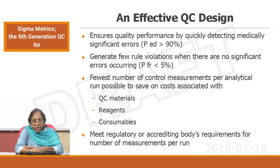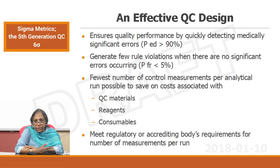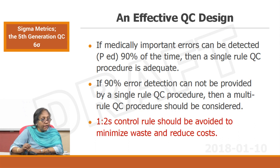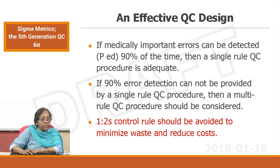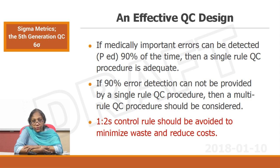That is also important because NABL, if it is asking for two levels of control for a certain number of patients, that is a regulatory requirement if you are looking for NABL accreditation. A very high sigma — like 6 sigma — technically will not need you to do more than one level of control, but if NABL regulations require two levels, then you have to comply with that. An effective QC design will have medically important errors detected more than 90 percent of the times, and if 90 percent error detection cannot be provided by a single QC procedure, then a multi QC procedure should be used. Also, the 1-2S rule should be avoided as a rejection rule to minimize waste and reduce cost — unless you have only one level of QC in your laboratory.